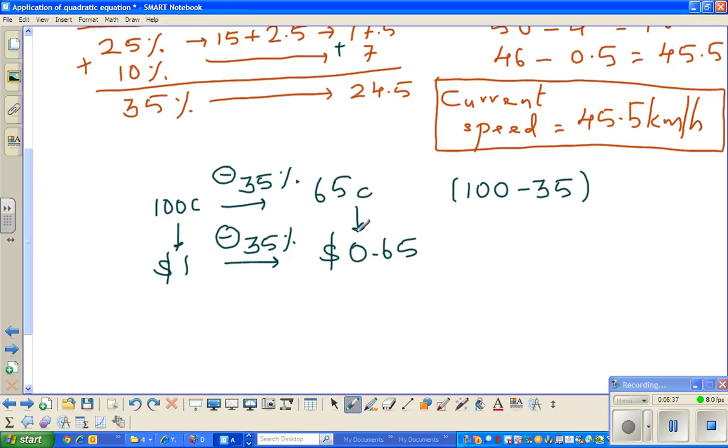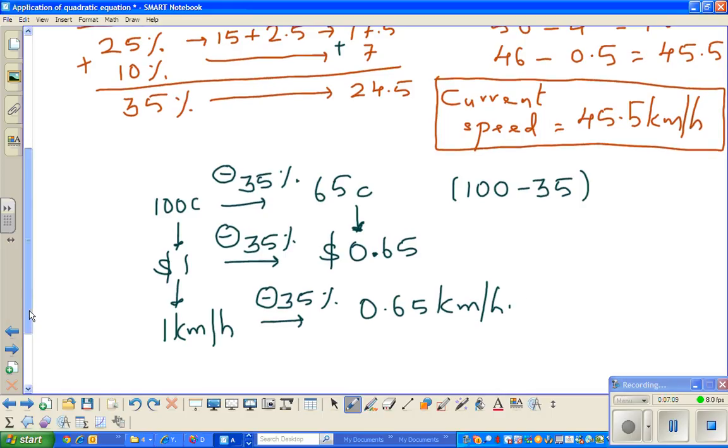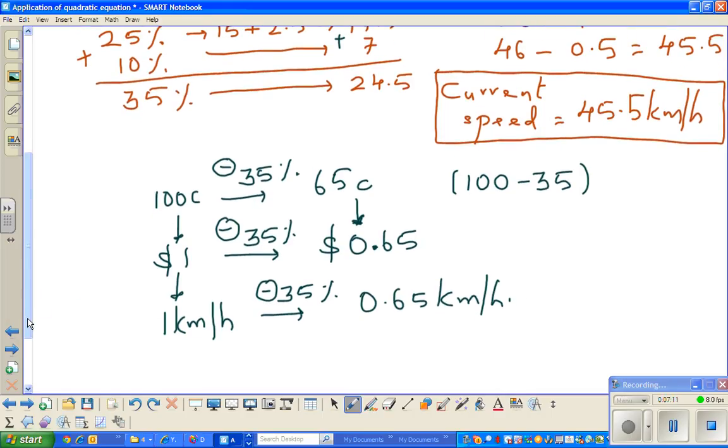Using the same argument, can I say 1 kilometer per hour, when reduced by 35%, you will get 0.65 kilometers per hour? Now the question is, if you know of 1, you can find of any number. This is called the factor of decreasing or reducing by 35%.